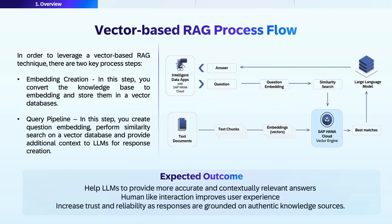Large language models are typically trained on a large, publicly available dataset, which makes them powerful in general contexts. However, their responses are not grounded on specific context — for example, your organizational policies, procedures, etc. Training an LLM is an expensive activity. Thus, Retrieval Augmented Generation provides an easier way to bring your organizational context to LLM responses.